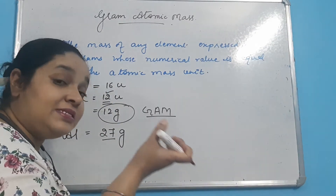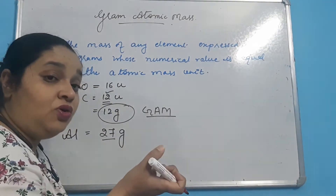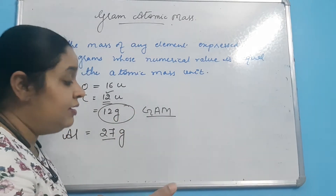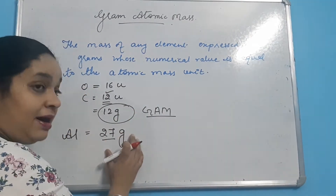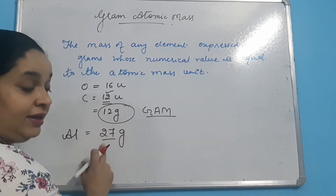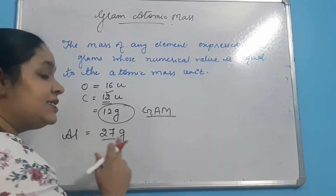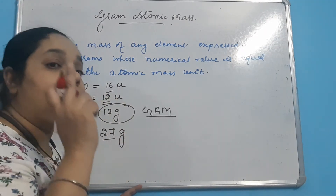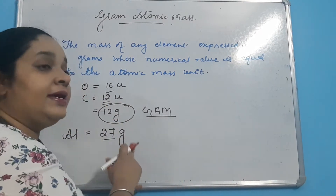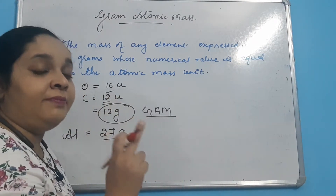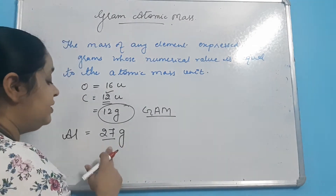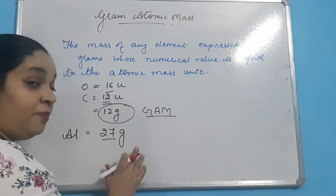So this 27 is equal to the atomic mass unit of aluminium — aluminium ka jo unified mass hai, woh bhi 27U hai. To kisibhi substance ko itni quantity mein lena ki uske gram mein mass ki jo numerical value hai woh unified mass ke barabar hi ho — us quantity ko hum gram atomic mass kehate hain. That is known as gram atomic mass.